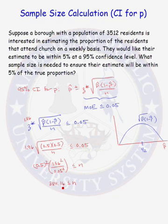So how many people should the borough sample to ensure that their margin of error will be less than 0.05, less than 5%? We have to decide whether they should sample 384 or 385. If they sample 384 individuals, their margin of error will be slightly greater than 0.05.